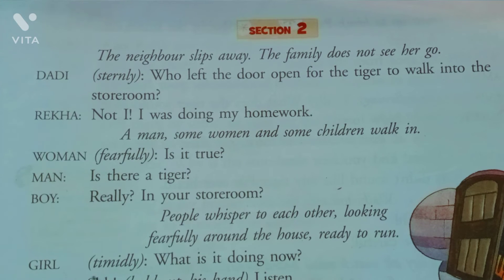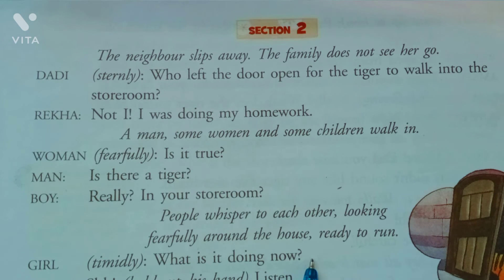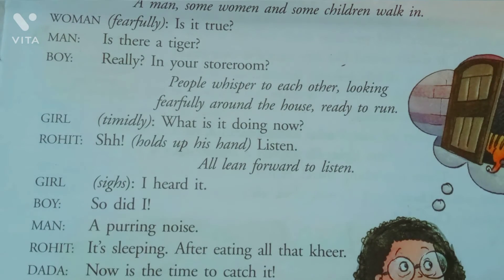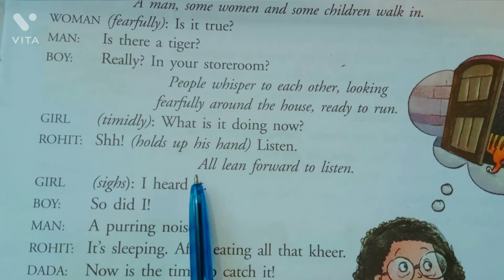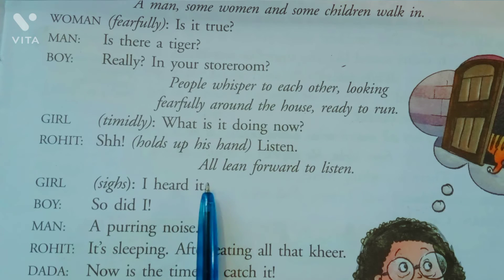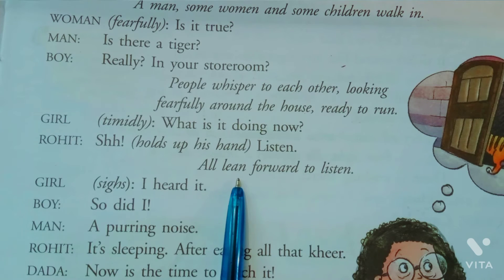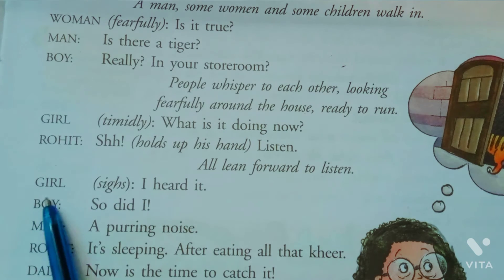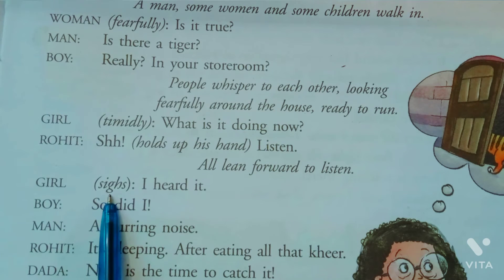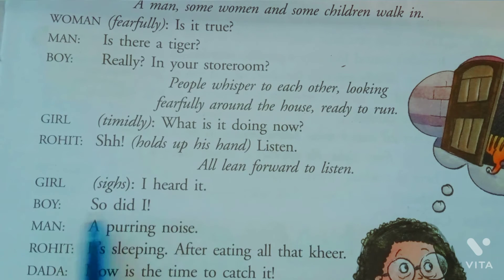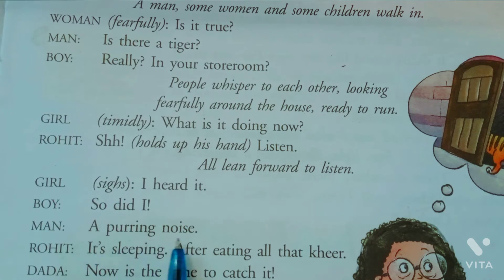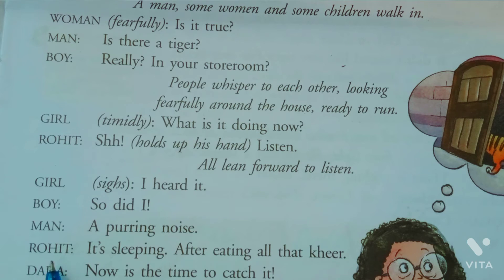Girl timidly poochti hai 'What is it doing now?' Rohit bolta hai 'Quiet — listen' aur haath uthata hai. Lean forward to listen — dhire se aage jaate hain. Girl sigh karke bolti hai 'I heard it.' Boy bola 'So did I.' Man bola 'A purring noise — par-par ki awaaz mujhe sunai di.'